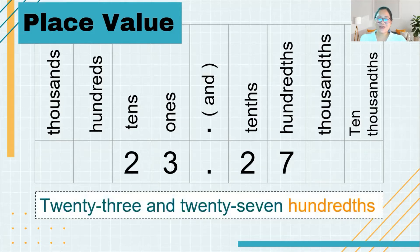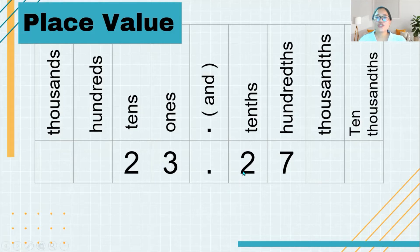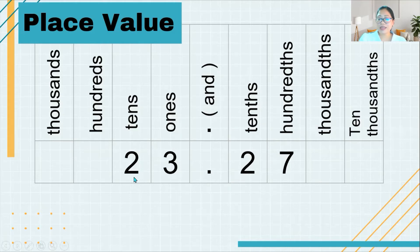Now let's go to another example. We have here 23.27 — so we say 'twenty-three and twenty-seven.' The last digit is 7, and 7 is in the hundredths place. So this is read as 'twenty-three and twenty-seven hundredths.'